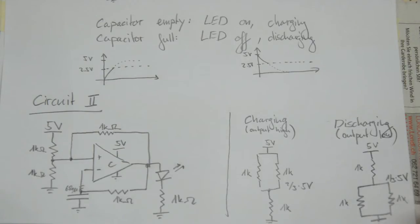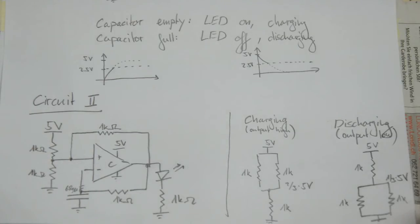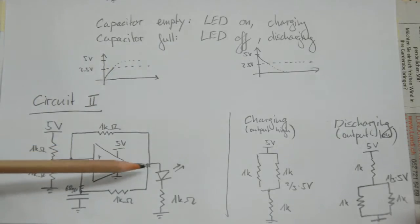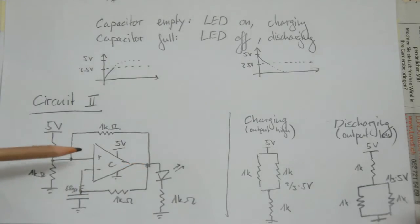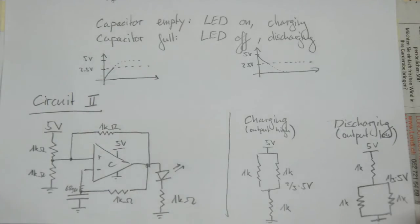If you think about it, it would be nice if we were somehow able to change the 2.5 volt bias voltage depending on the current state of the system. We can do that by adding an additional resistor between the output of the comparator and the non-inverting input. Otherwise the circuit is exactly the same as before — the only difference is this additional resistor.